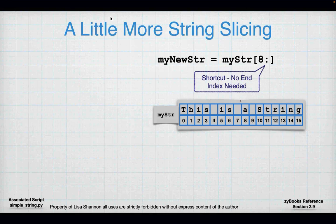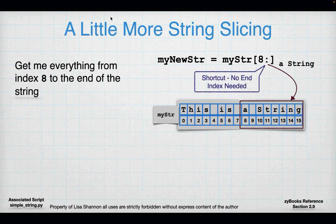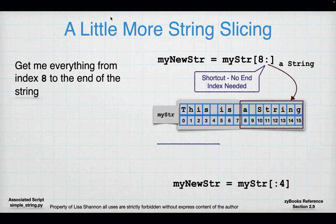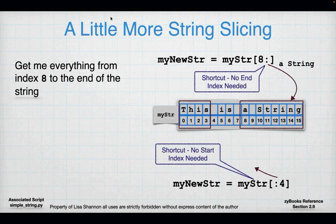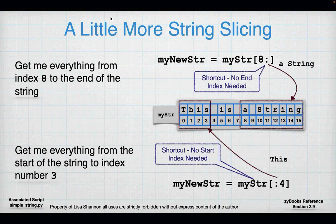More about string slicing — you'll probably need to use it this week. There are two shortcuts. First, you don't have to use an end index: if you want to start at index 8 and go all the way to the end, just leave the end index off — Python knows to go to the end. Second, you can start at the beginning and go to a specific index by leaving the start off. For example, my_str[:4] gives 'THIS.' Python will start at index zero and go to — but not include — index 4.